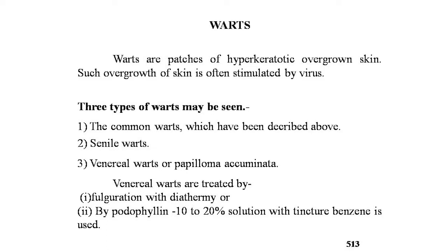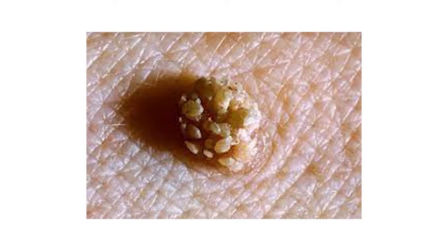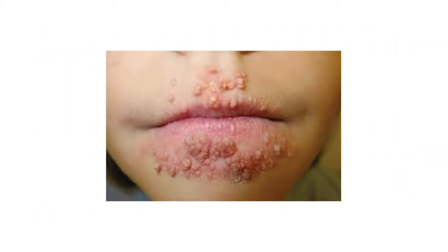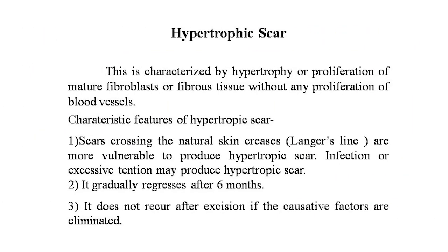Three types of warts may be seen: common warts, senile warts, and venereal warts or papilloma acuminata. Venereal warts are often seen in the coronal sulcus of the penis, the anal region, scrotum, and perineum. They are treated by fulguration with diathermy or by podophyllin — a 10 to 20 percent solution with tincture benzoin. Here is a clear picture of warts on the skin, showing warts on the upper and lower lips.